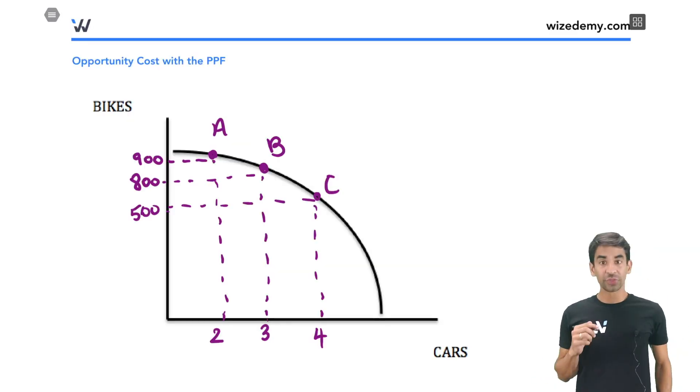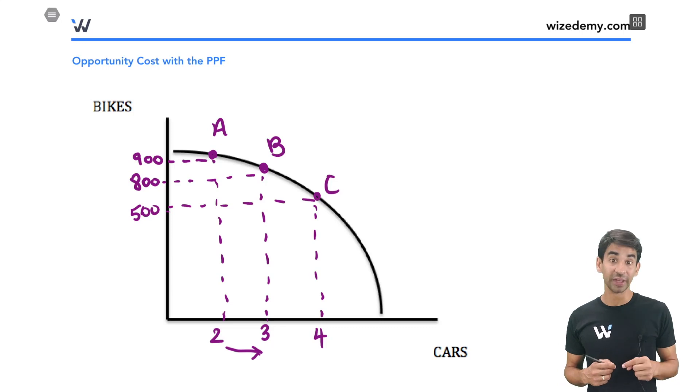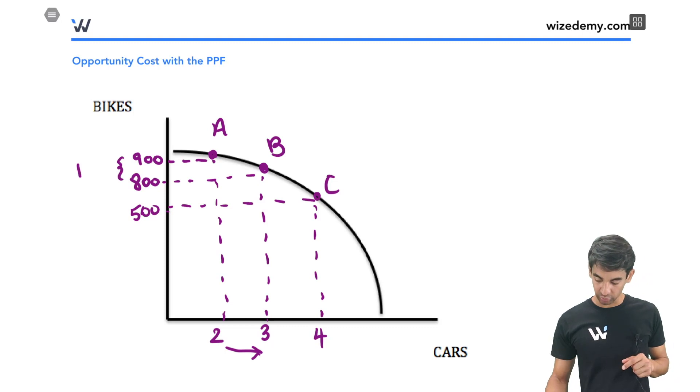The second major thing to know about the PPF is about opportunity costs. So let's say we're going on this graph from point A to point B. As I go from point A to B, how many extra cars am I making? It's just one extra car from two to three cars. How many bikes do I have to give up from point A to B? How many bikes do I have to give up to make that one extra car? The answer would be 100 bikes from 900 to 800. That is called your opportunity cost.